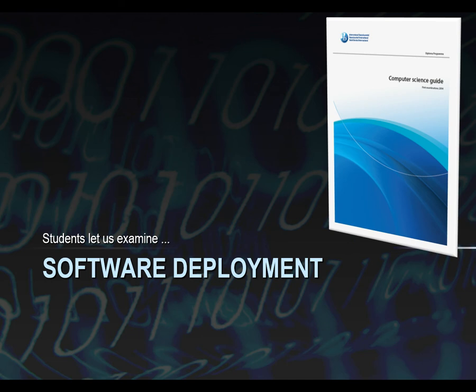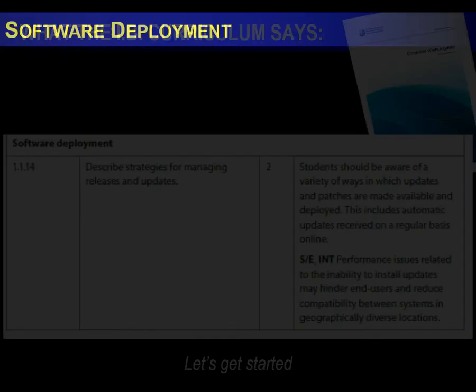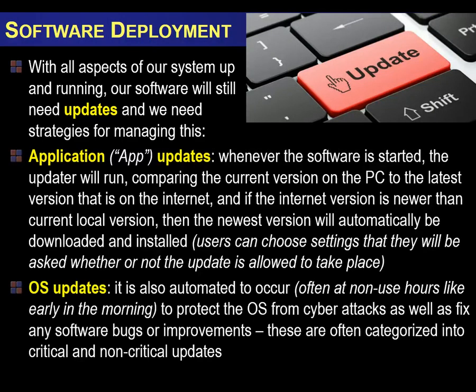Software deployment is the last section of the curriculum in this portion. We've got a new system in place — something needs an update. How do we do that? We need to describe strategies for managing releases and updates. For example, the version of NetBeans in this lab isn't the newest — we could update it, but we won't until end of semester; that's the school's IT management policy. One update type is an in-app update: when software starts, the updater checks what version is installed against what's current on the website.